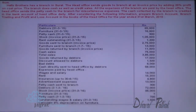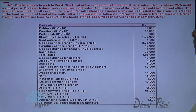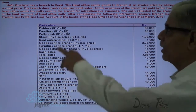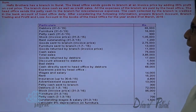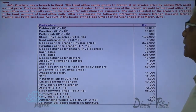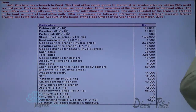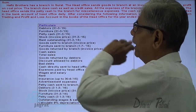Observe the sum on screen. Hafiz Brothers has a branch at Surat. The head office sends goods to the branch at an invoice price by adding 25% profit on cost price. The branch does cash as well as credit sales. All expenses of the branch are paid by the head office, which also sends petty cash to the branch for miscellaneous expenses.